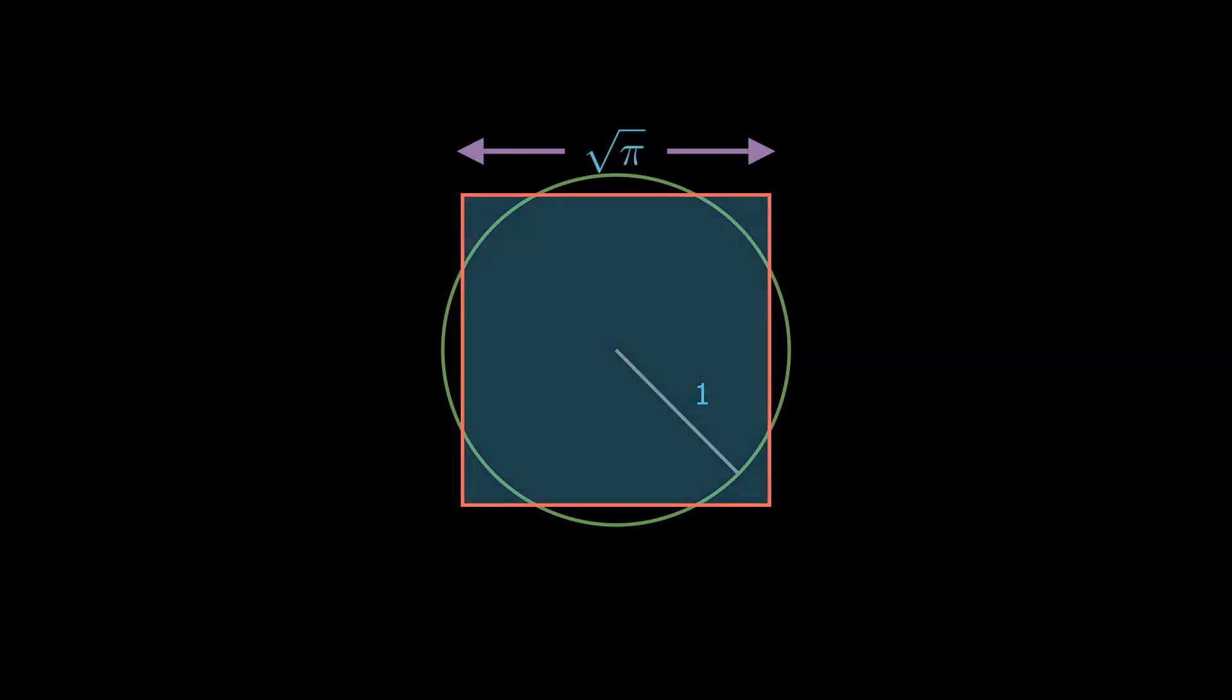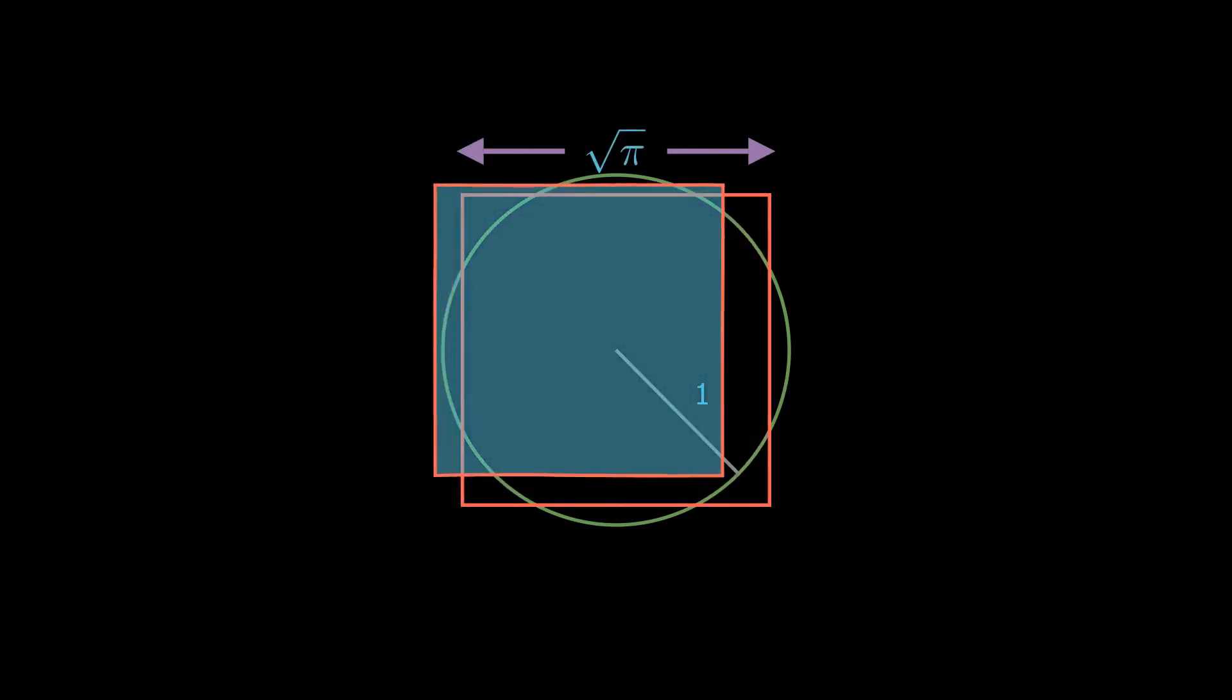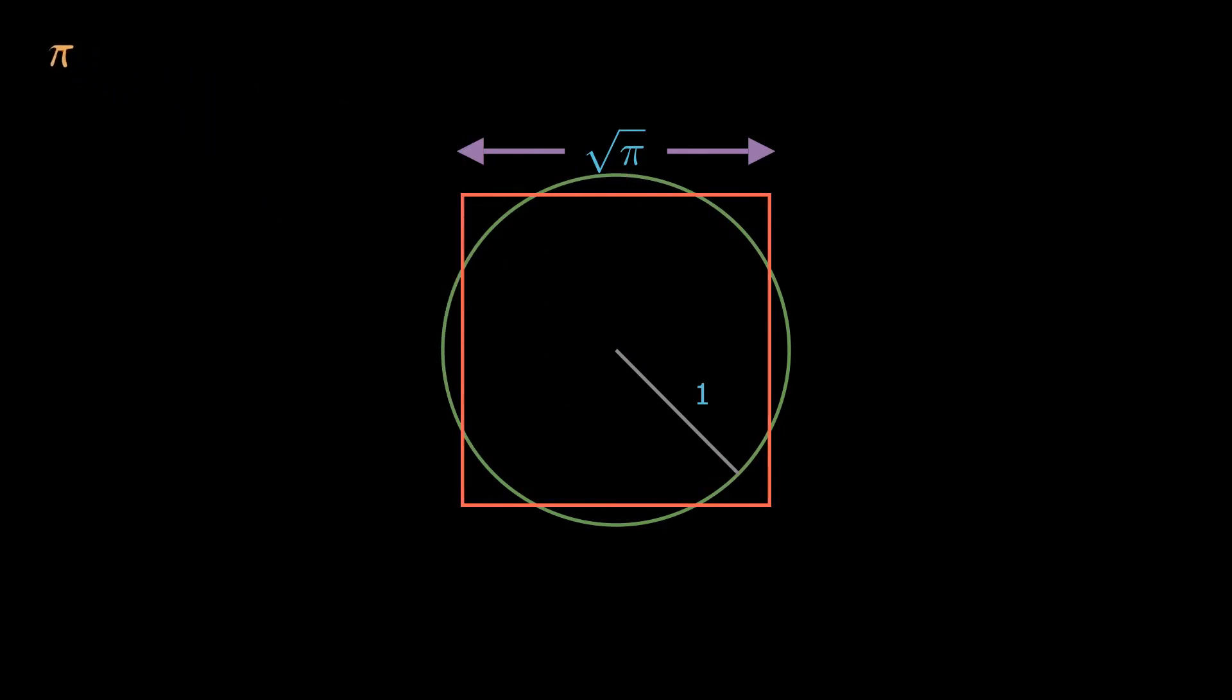Have you heard the phrase squaring the circle? It's when you are asked to construct a square with its area equal to that of a circle only by using a compass and a straight edge. Let me spoil the problem by revealing that it's been proven to be impossible.